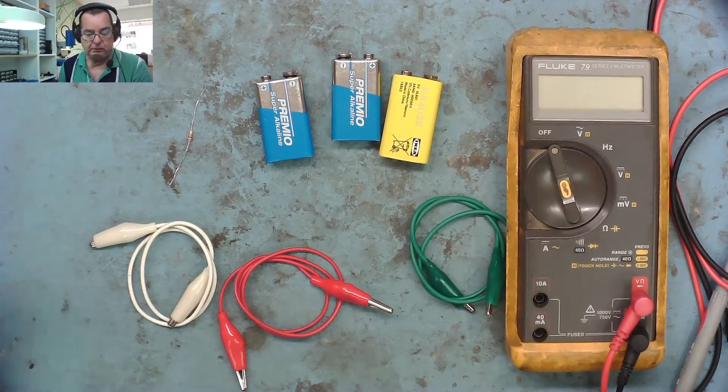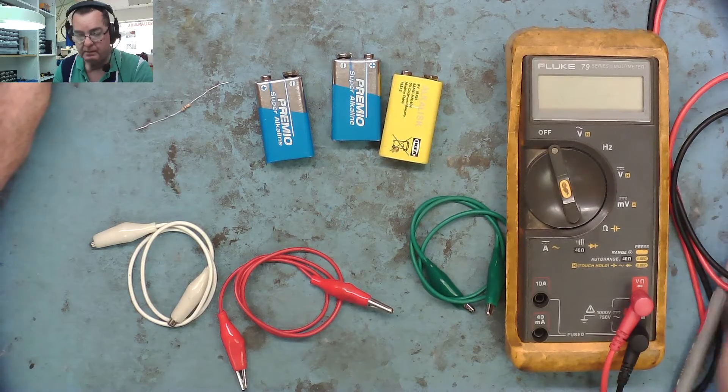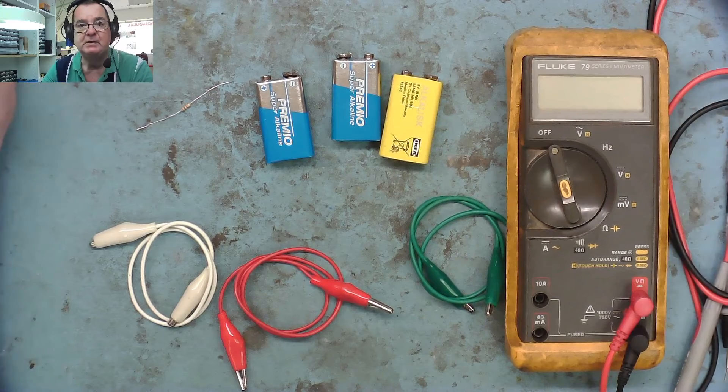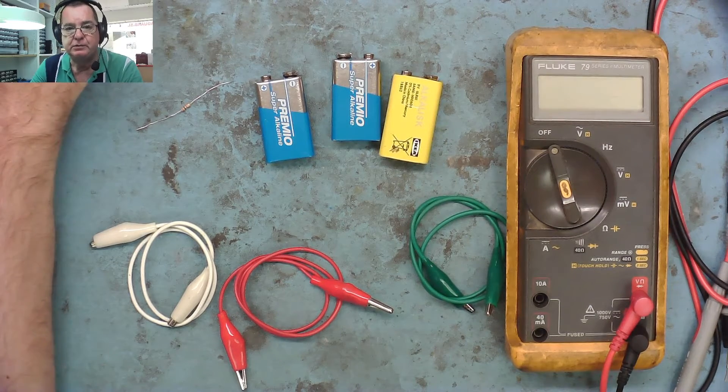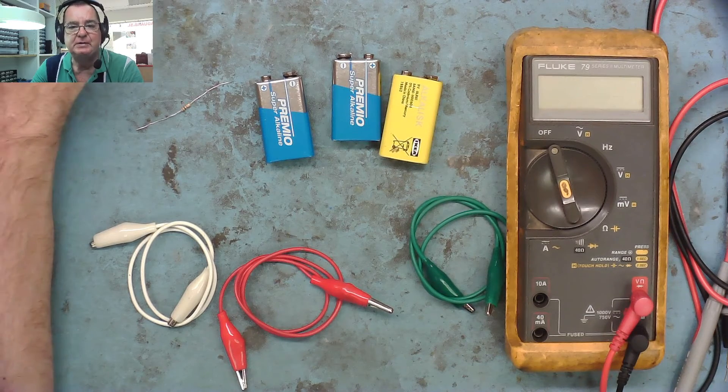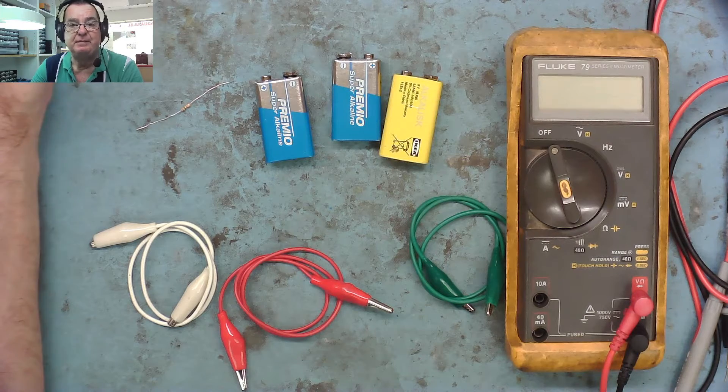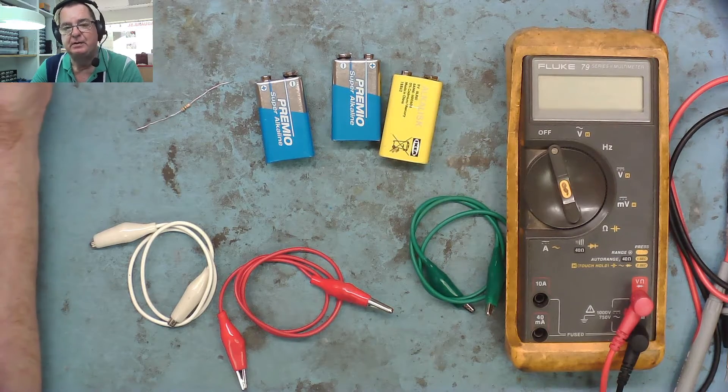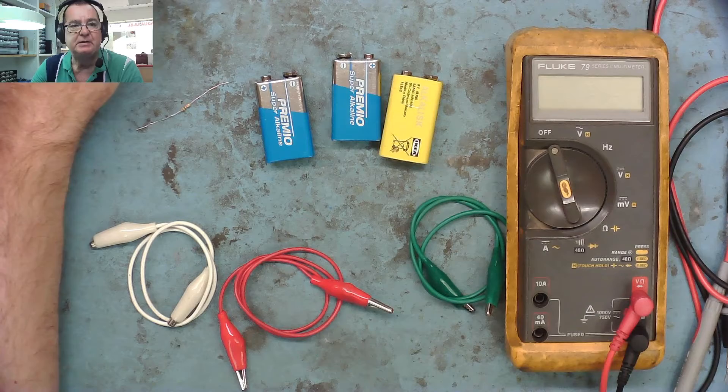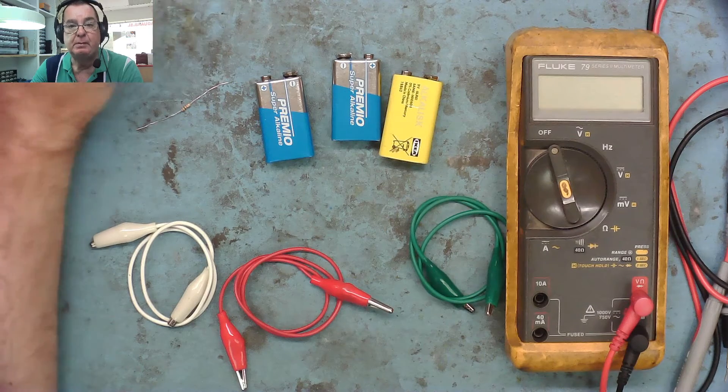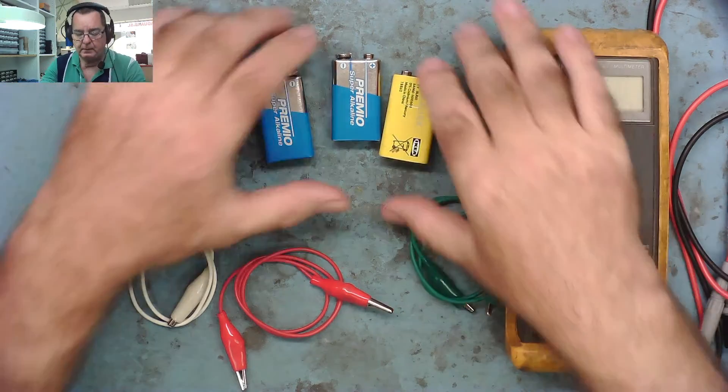three crocodile clippers, and a resistor. This is all we need to make a tester that will test Zener diodes, and it's also excellent for testing strings of LEDs like you find in Christmas lights. So let's make the tester and then see how it works.